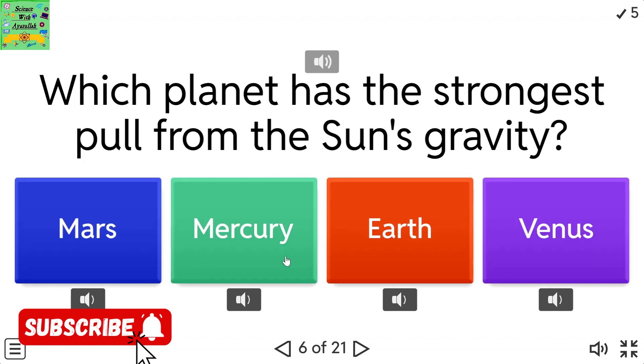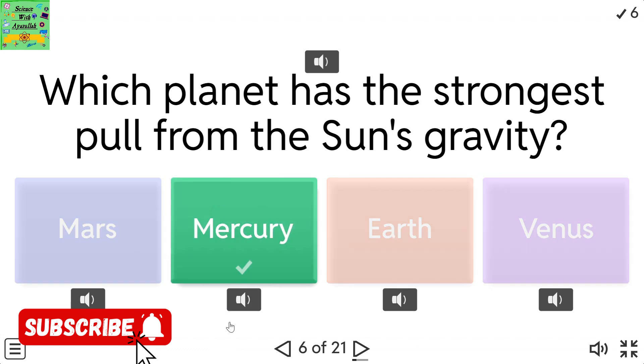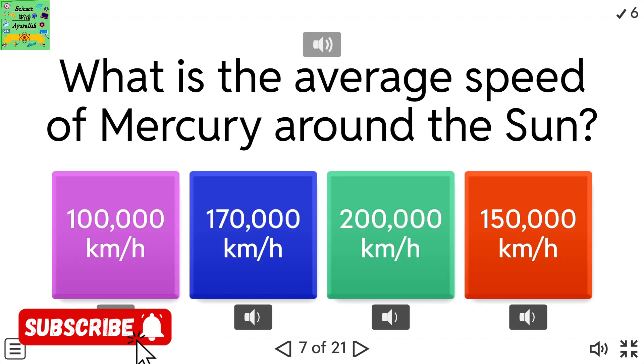Which planet has the strongest pull from the Sun's gravity? Mars, Mercury, Earth, Venus. What is the average speed of Mercury around the Sun? 100,000 kilometers per hour, 170,000 kilometers per hour, 200,000 kilometers per hour, 150,000 kilometers per hour.